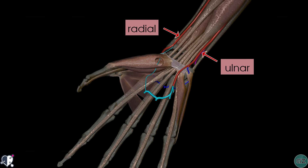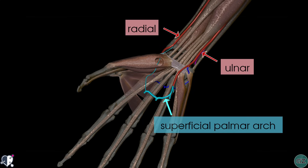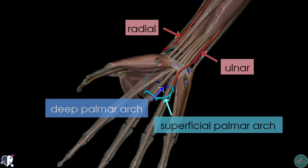We can also see two arterial arches in the palm of the hand. Superficially, in light blue, is the superficial palmar arch. This arterial arch lies superficial to the flexor tendons and deep to the palmar aponeurosis, which isn't shown on this model. Deep to the flexor tendons is the arch highlighted in dark blue — the deep palmar arch — sandwiched between the flexor tendons and the metacarpal bones.